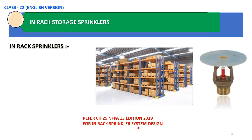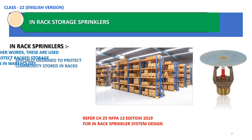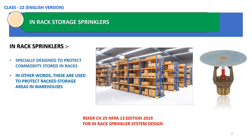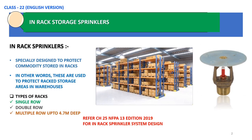As you can see on your screen, this is an in-rack sprinkler which has a protective shield. These sprinklers are specifically designed to protect commodities stored in racks — in other words, they are used to protect racked storage areas in warehouses. We have various types of racks such as single row racks, double row racks, and multiple row racks up to 4.7 meters deep.